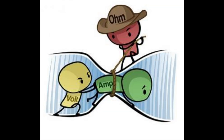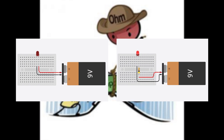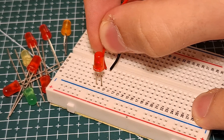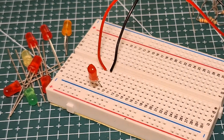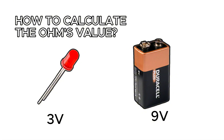Resistors are essential in controlling the flow of current in a circuit. Without them, components like LEDs can receive too much current and get damaged, like in the beginning of the video. So, how are we going to calculate the resistor's value?